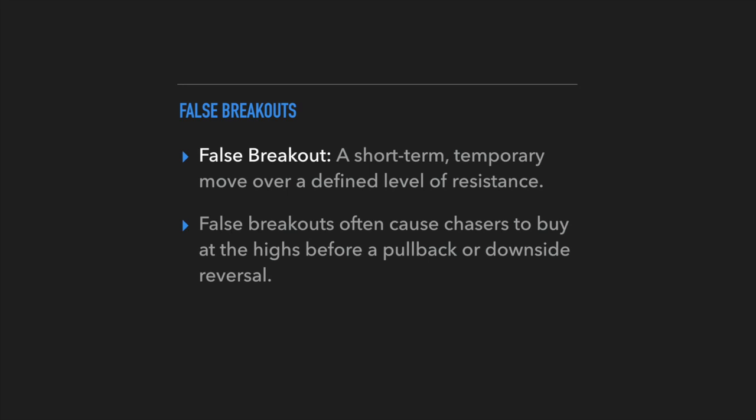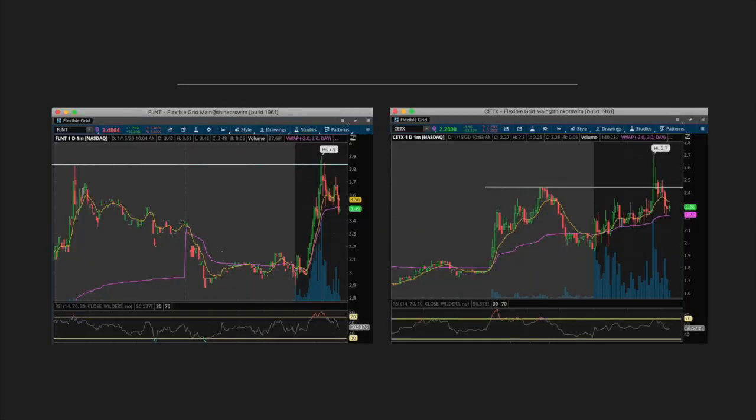A false breakout is a short-term, temporary move over a defined level of resistance — exactly what we saw in the previous example. These false breakouts often cause chasers to buy at the highs before the stock pulls back down or reverses to the downside. We want to buy low and sell high, not the opposite, so buying into false breakouts is something we of course want to avoid.